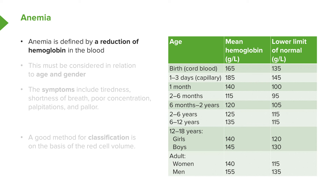Anemia is very common throughout the world. It can be defined as a reduction in the hemoglobin level within the blood, but remember that this must be taken in relation to two factors: one is the age of the patient and the other is the gender. Let's look at the table on the right which shows typical hemoglobin concentrations at different ages. Looking at the mean hemoglobin column, cord blood at birth has a high hemoglobin concentration around 165 grams per liter, but then at one month this has already fallen to 140 grams per liter.